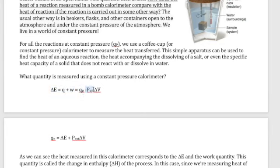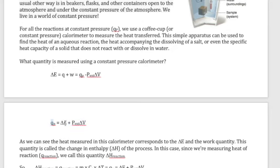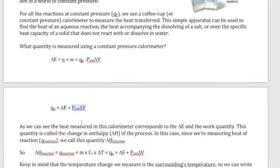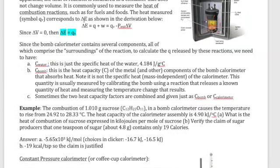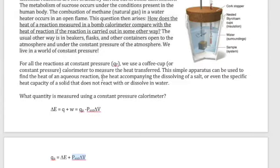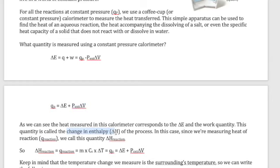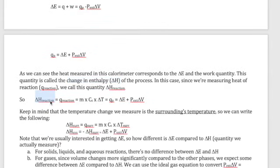Going back to the equation: delta E equals q plus w, where q-sub-p is heat at constant pressure and w is negative p-external times delta V. Rearranging to isolate q-sub-p shows it equals delta E plus p-external times delta V — it's not purely delta E. We give this new quantity the name change in enthalpy, or delta H. Delta H is the idea that this is heat measured under constant pressure. When we say delta H of a reaction, we're referring to q of the reaction, calculable using mc delta T.